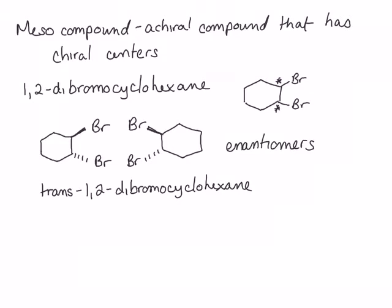Take a moment and pause the video and determine the absolute stereochemistry at each one of the chiral centers. Hopefully what you've determined is that the structure on the left has two R centers, and the structure on the right has two S centers. Because they are mirror images of one another, the absolute stereochemistry on the left will be mirror images of the absolute stereochemistry on the right. Hence, both of the ones on the left are R, making both of the ones on the right S.